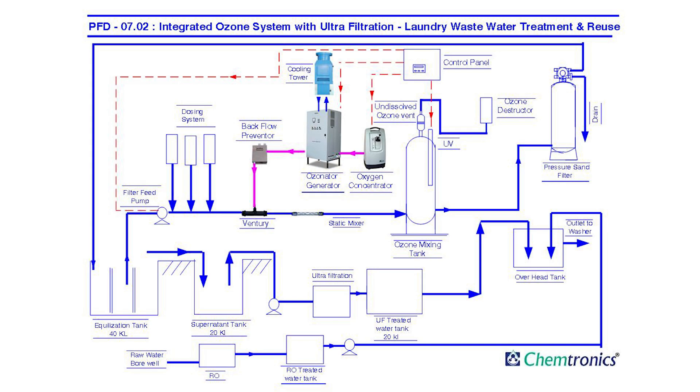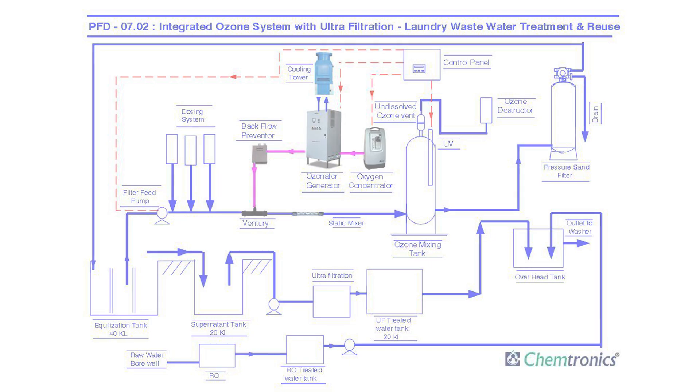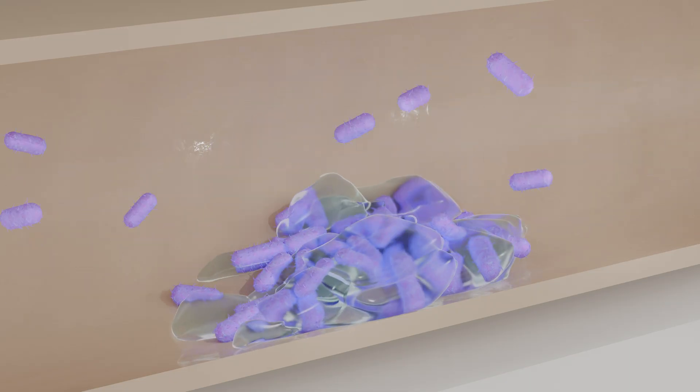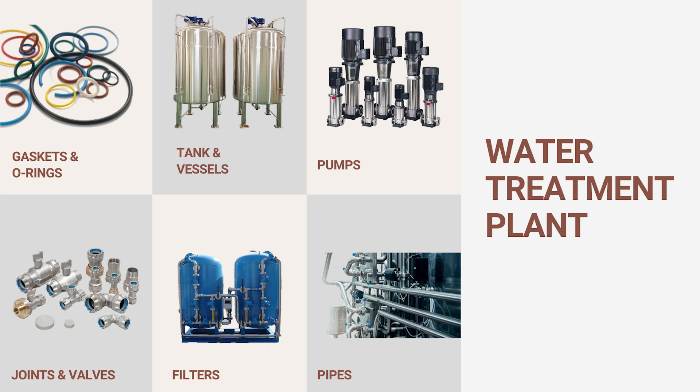A typical water treatment plant and distribution network have multiple places where biofilm can be formed. Some examples where biofilm can be formed easily are storage tanks, pipes, valves, pumps, filters, strainers, sensor probes, joints, gaskets, and O-rings.